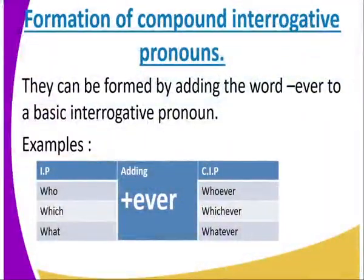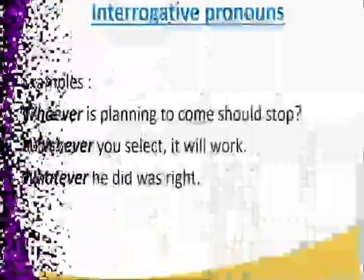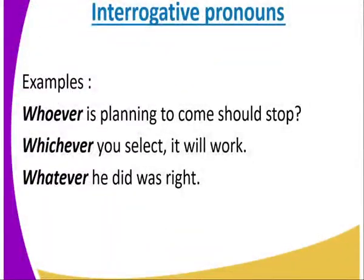Now let's look at the formation of compound interrogative pronouns. They are formed by adding '-ever' to a basic interrogative pronoun: who plus ever gives whoever; which plus ever gives whichever; what plus ever gives whatever. Examples: Whoever is planning to come should stop. Whichever you select will work. Whatever he did was right. These are examples of compound interrogative pronouns.